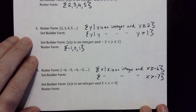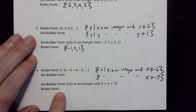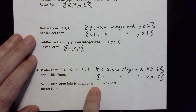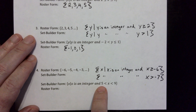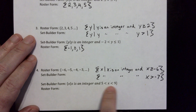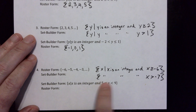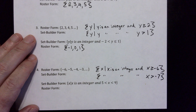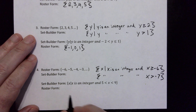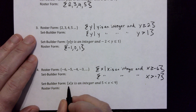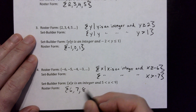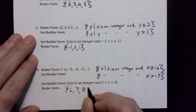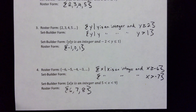For the last part, x is an integer and five is less than x is less than nine — notice there are no lines underneath, so five and nine are not included. The integers strictly between five and nine are six, seven, and eight, and that's it.